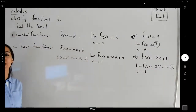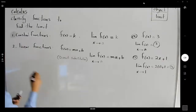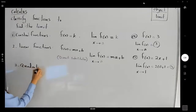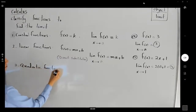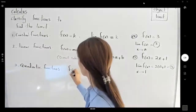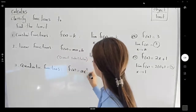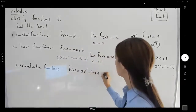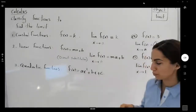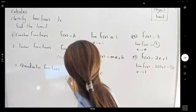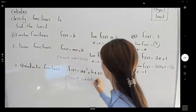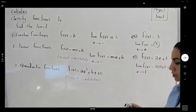The next nice function is the quadratic function. A quadratic function is f of x equals ax squared plus bx plus c, and to find the limit, we're going to use direct substitution.